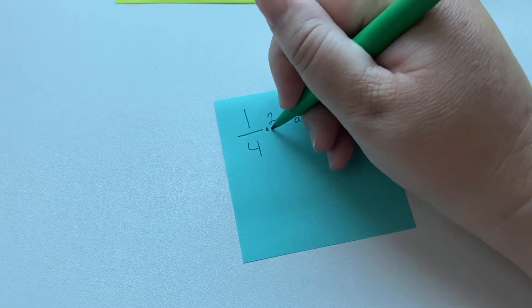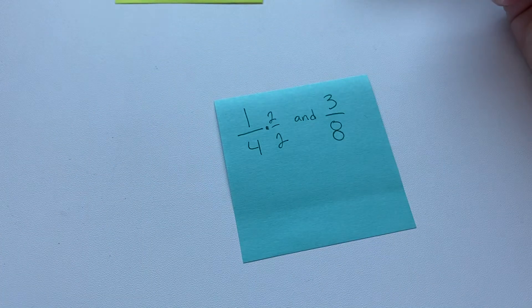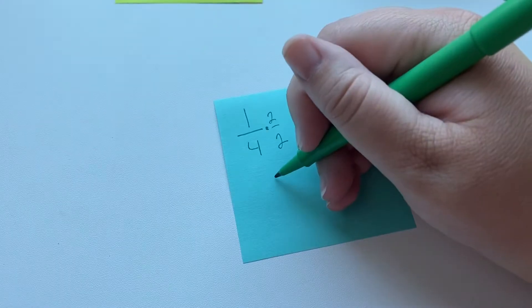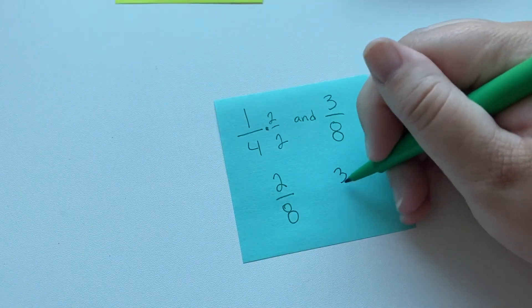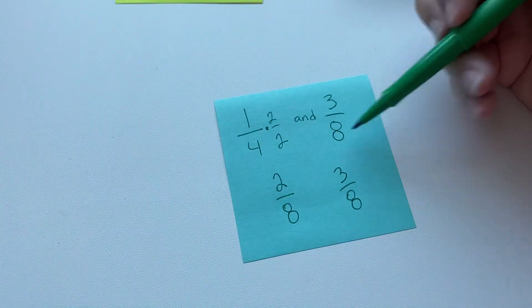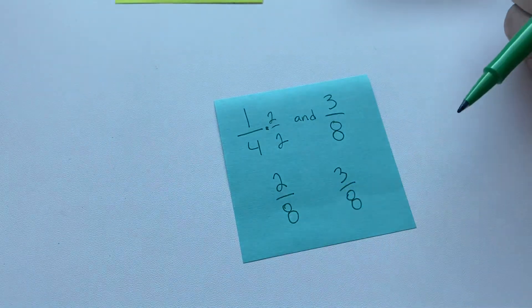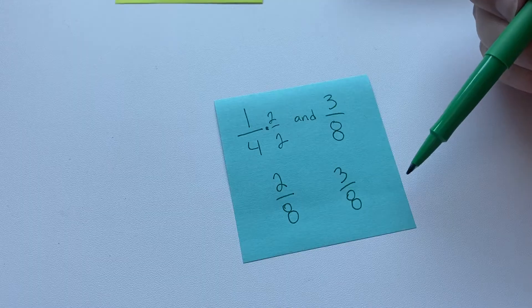So we just have to multiply one fourth times two over two, and we are going to get two eighths. And then this one's three eighths. We don't have to do anything to that because it already has our common denominator that we were looking for. And so now we could add or subtract these.